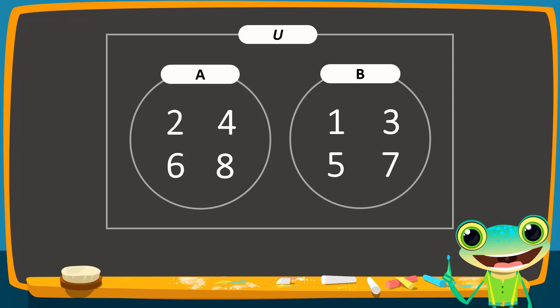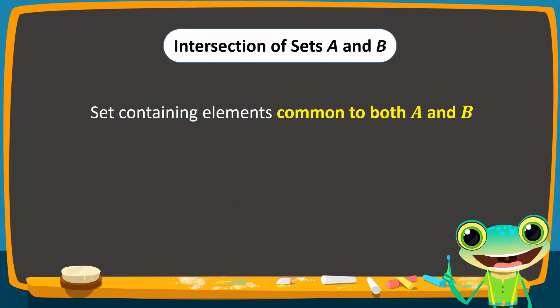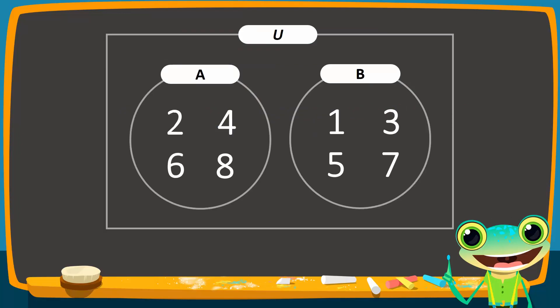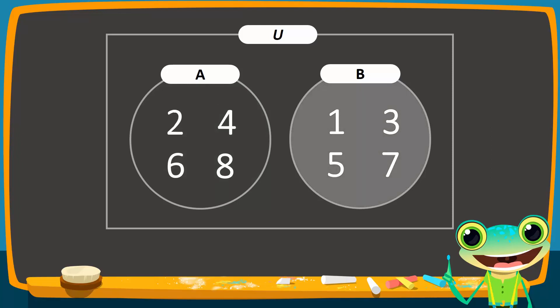To represent A intersection B, we go back to the definition of intersection. A intersection B contains elements that are common to both sets. Observe that there are no common elements — elements of set A are only in set A and not in set B, and similarly, elements of set B are only in set B and not in set A. Since there is no common element, their intersection is an empty set. Hence, there is no region to shade, unlike the overlapping sets we saw just now.